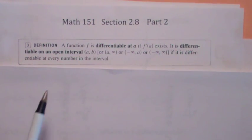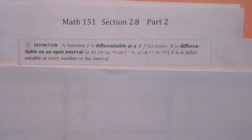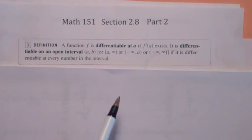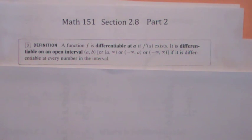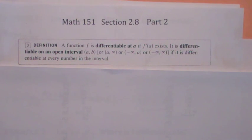Here's the definition. A function is differentiable at a if f' exists. But remember, f' is a special type of limit. So when you're claiming a limit exists, you're really claiming the left side of a limit agrees with the right side.